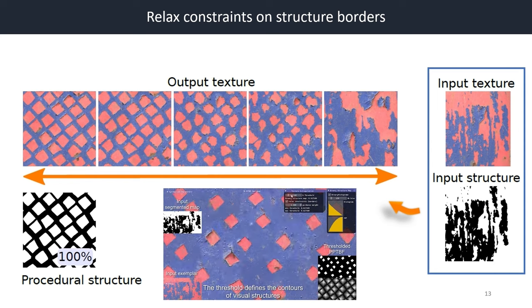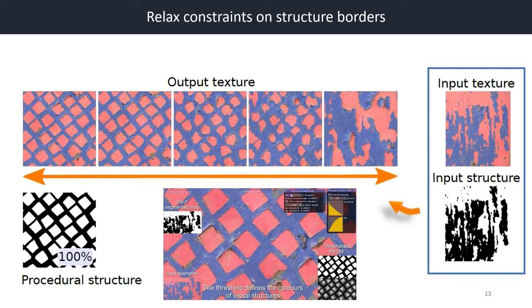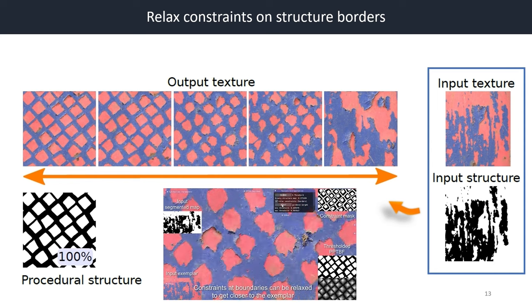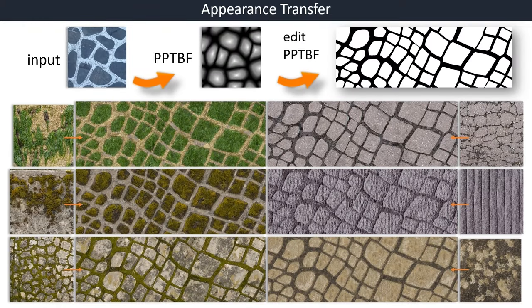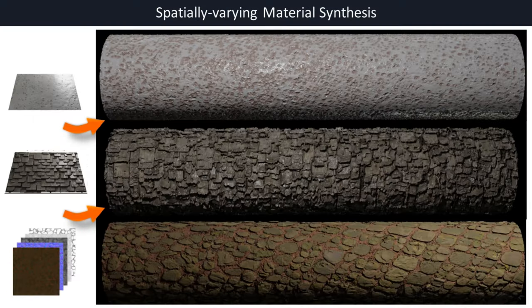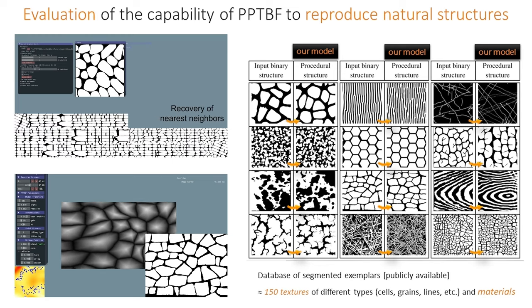You can relax some constraints on structure, either follow it or follow the exemplar, or morph in between. You can make spatial variations of the structure parameters. We can do appearance transfer by keeping the structure and changing the colors. We can extend it to automatically to materials, synthesizing the other maps at the same time.